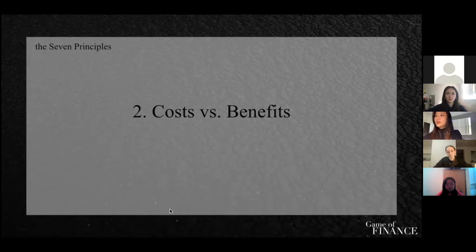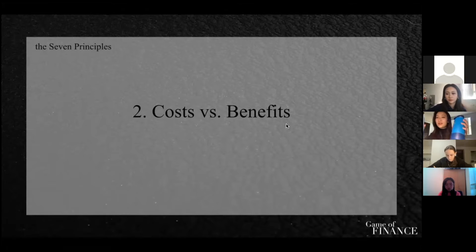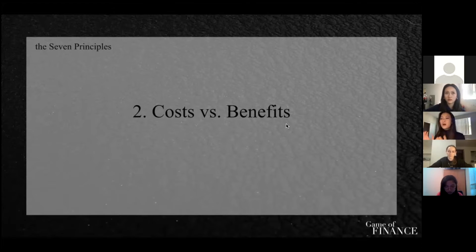Moving on to the second principle: cost versus benefit. It's similar to the first one but different. Scarcity forces trade-offs is a positive decision, but cost versus benefit is a normative decision — you have to consider the cost and benefit of two products. For example, I want A but A is too expensive, so I'll get B. I'll benefit similarly from both even if slightly less from B, and B is cheaper. So considering the costs and benefits of two products, you make a decision — it's kind of in between normative and positive.